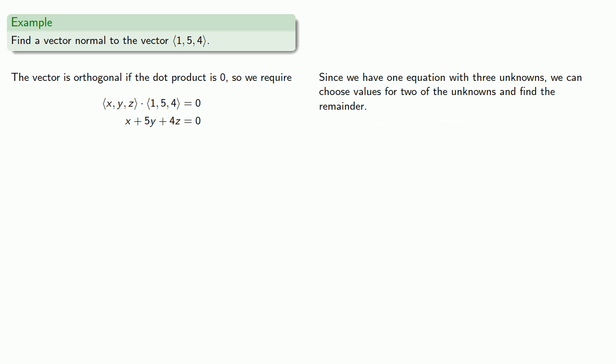So you can choose your own values, but I'm going to let y equals 1 and z equals 3, because I like the numbers 1 and 3. Anyway, if we do that, we find x is negative 17, and so our normal vector will be x equals negative 17, y equals 1, z equals 3.